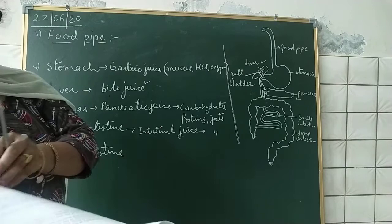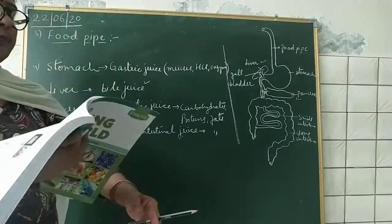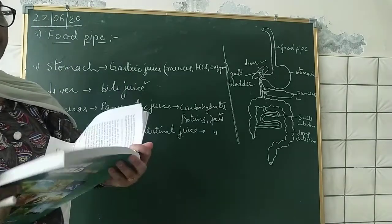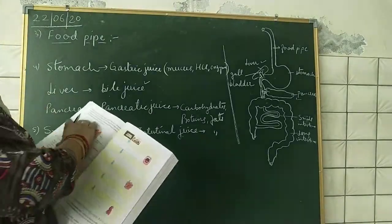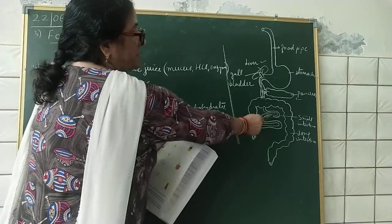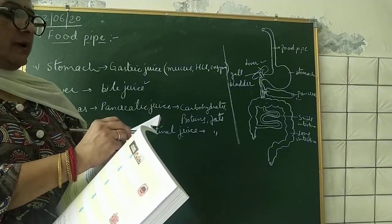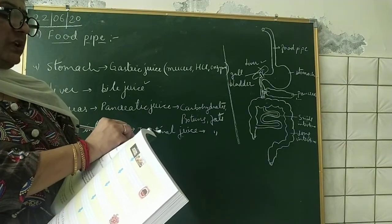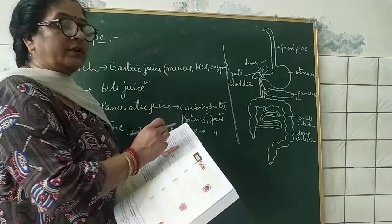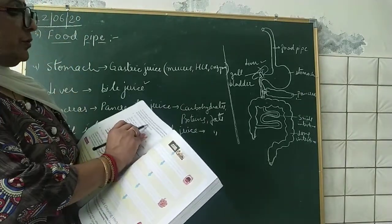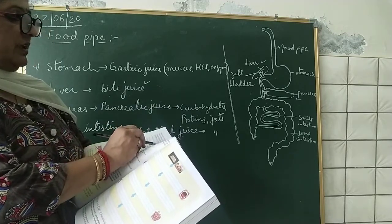Intestinal juice helps in the complete digestion of food. Complete digestion takes place inside the small intestine. It converts carbohydrates into simple sugars like glucose. Proteins are broken down into amino acids, and fats are broken down into fatty acids.